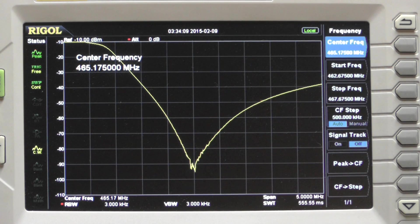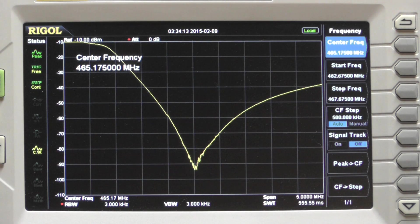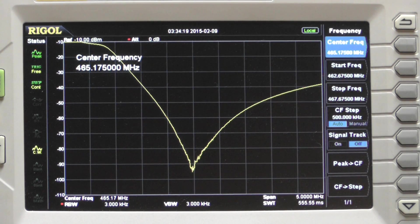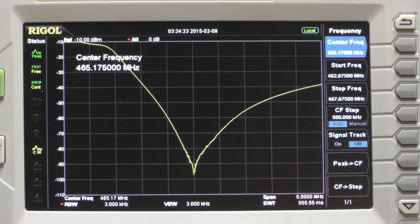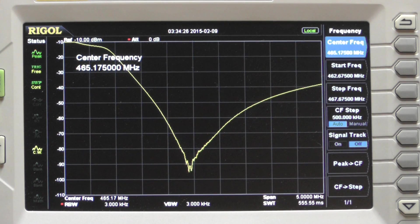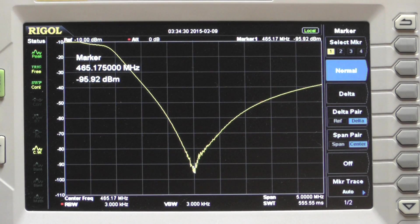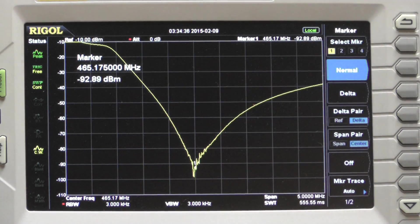I'm just kind of roughing this in. You'll notice I didn't normalize the tracking generator. Normalizing the tracking generator takes out a little bit of the variation of the power output of the tracking generator to give you a nice flat line. At this point that's not really important. I just want to rough tune it to get the notches at the center of frequency, which in this case is 465.175. We're on a marker there. We can read out our power level.